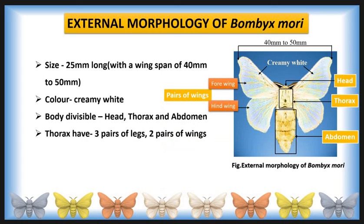The thoracic segment is divided into three segments: prothorax, mesothorax, and metathorax. There are two pairs of wings present on two thoracic segments — the mesothorax having the forewing and the metathorax having the hindwing. The forewing pair overlaps the hindwing pair when the moth is in a resting position. Wings are creamy colored and several faint brown lines are present on the wings.